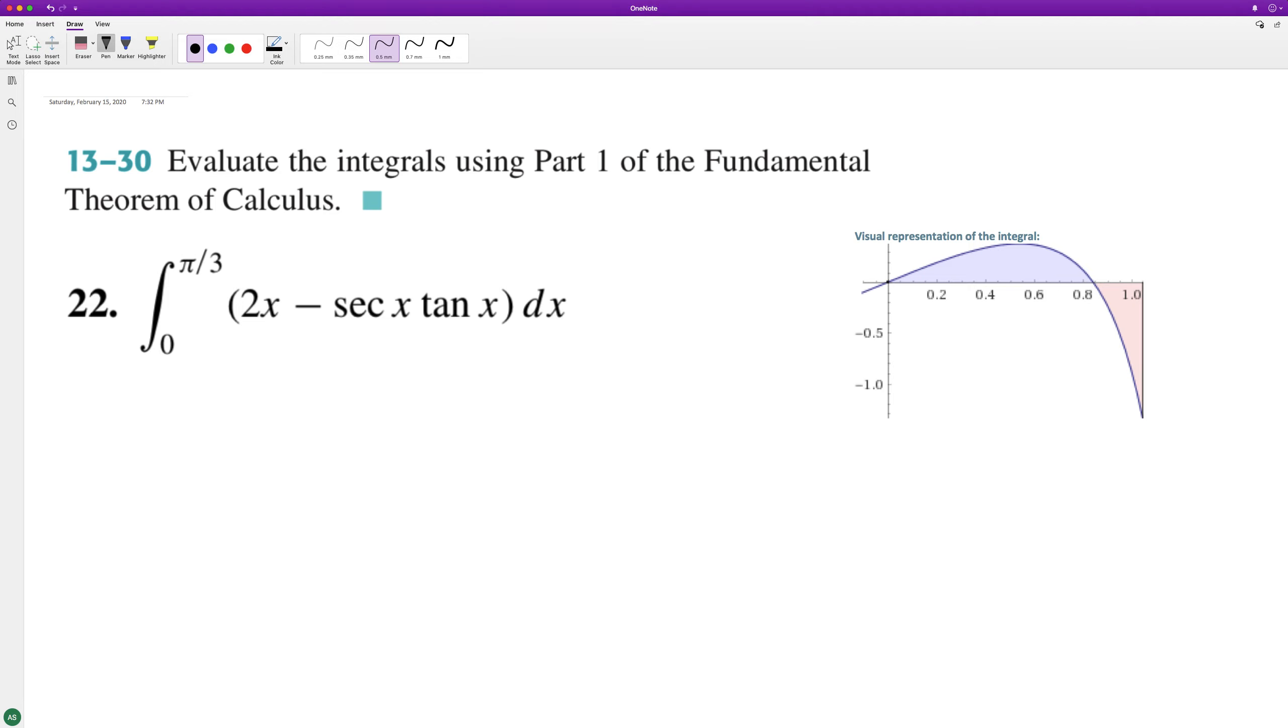from zero to pi over three. When we integrate this, we end up with two x squared over two minus, and then secant x tangent of x is equal to secant of x, we're going from zero to pi over three.